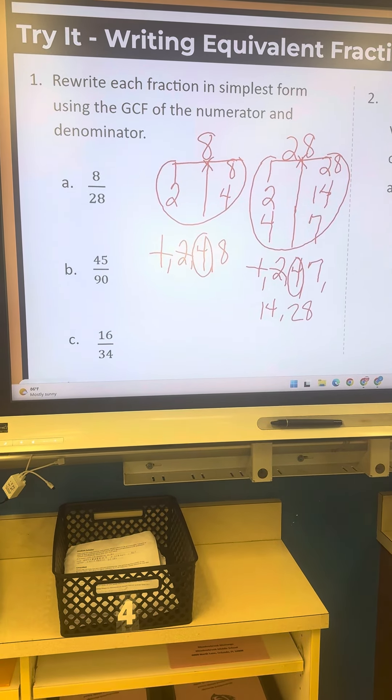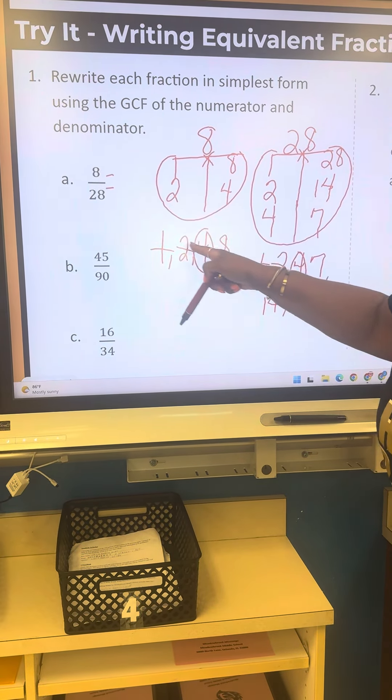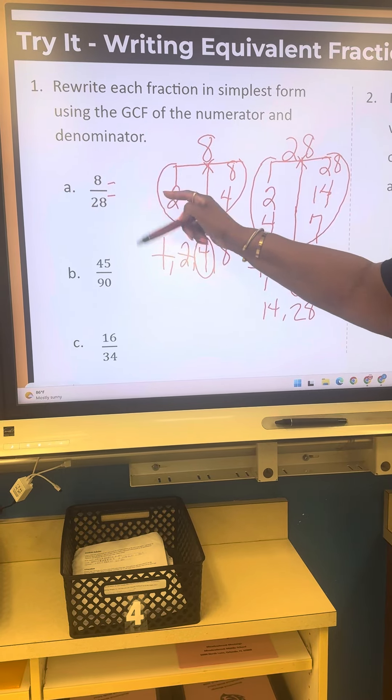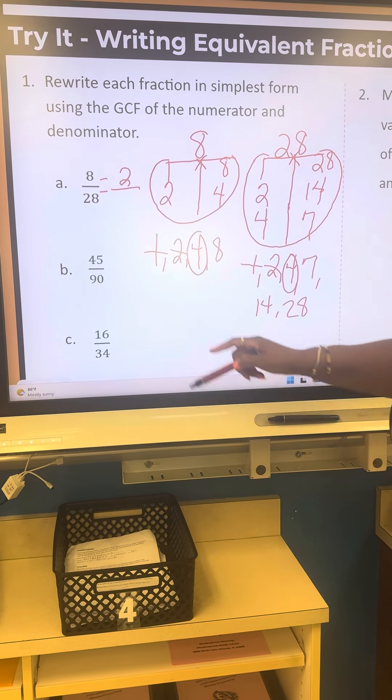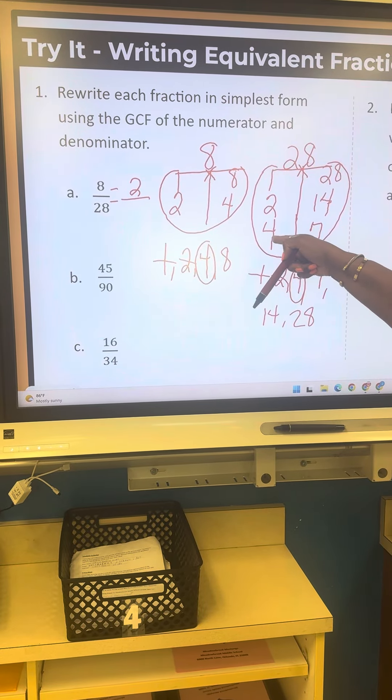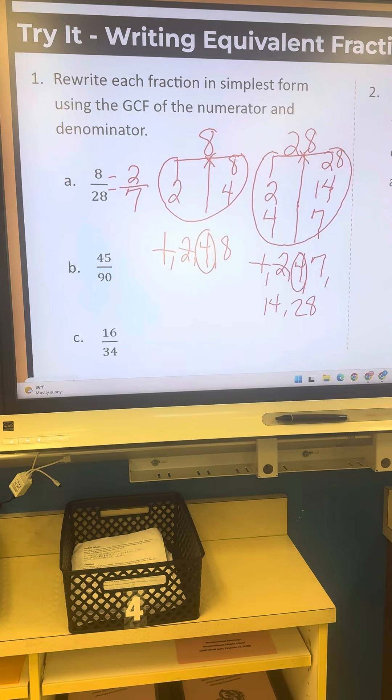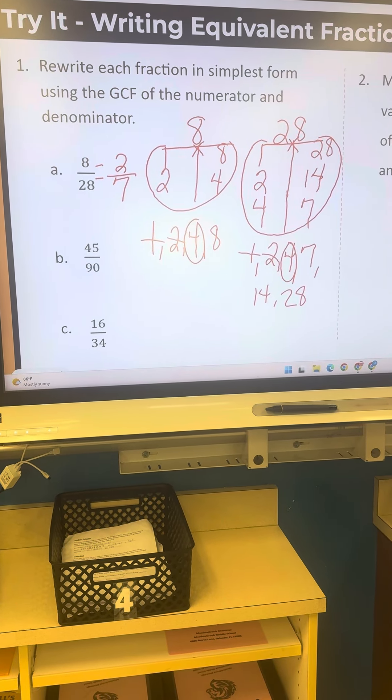Now I need to put this in simplest form. The math is already done. So, 8 divided by 4, I already have it right there, 2. And then, 28 divided by 4, I already have the answer right there, 7. So, in the simplest form, that answer would be 2 over 7.